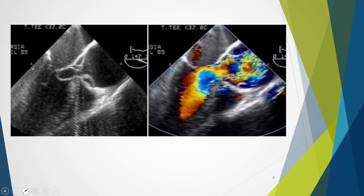Here we can see a dissection that has come down and the support has been lost to the aortic valve — it prolapses into the ventricle. When colour is applied, we can see a significant amount of regurgitation with a lot of flow going back down into the ventricle.